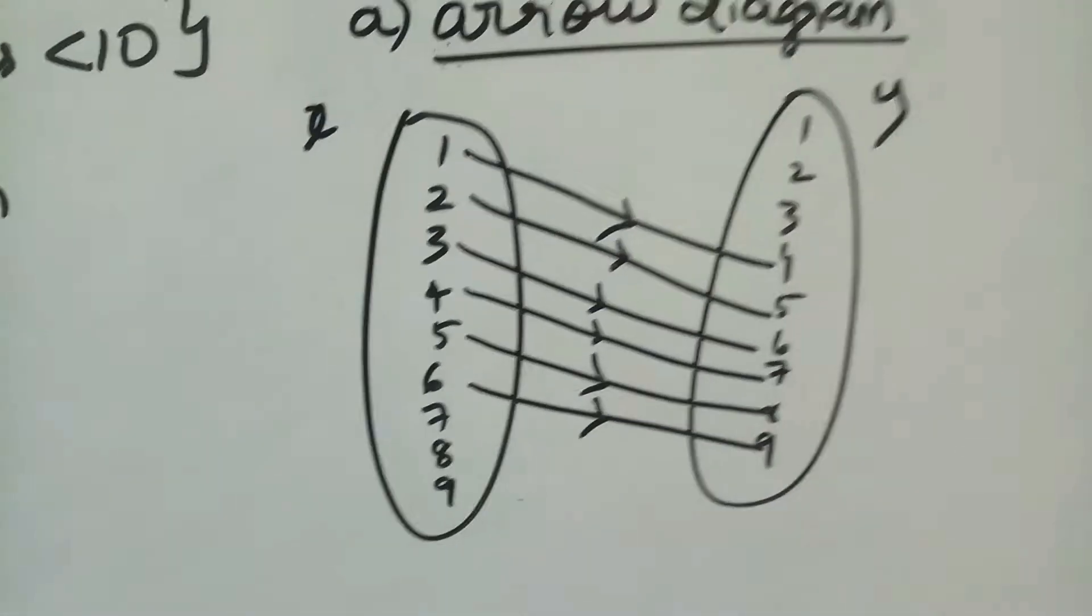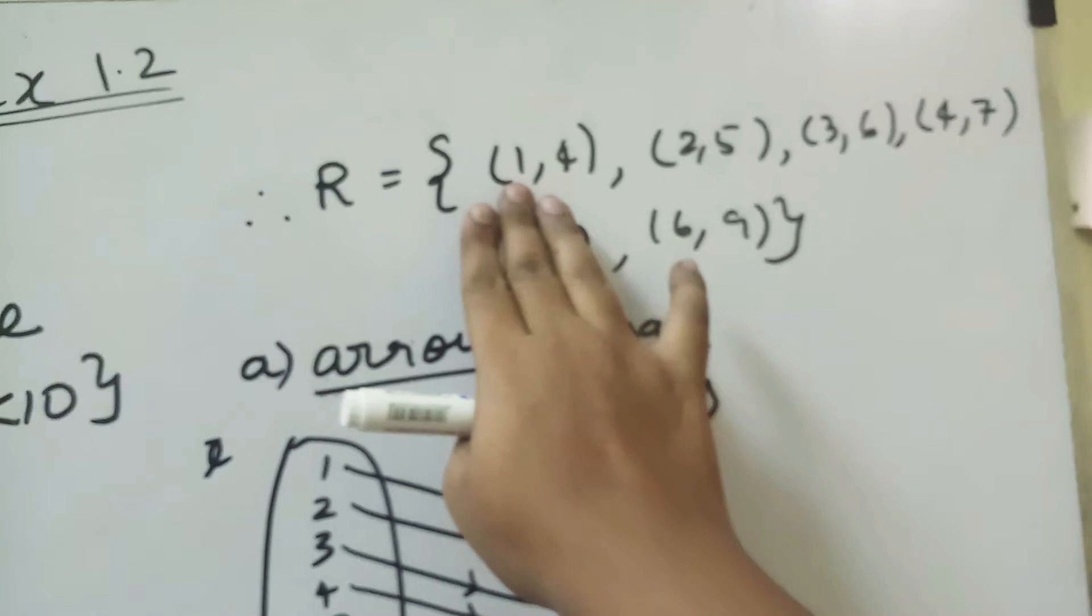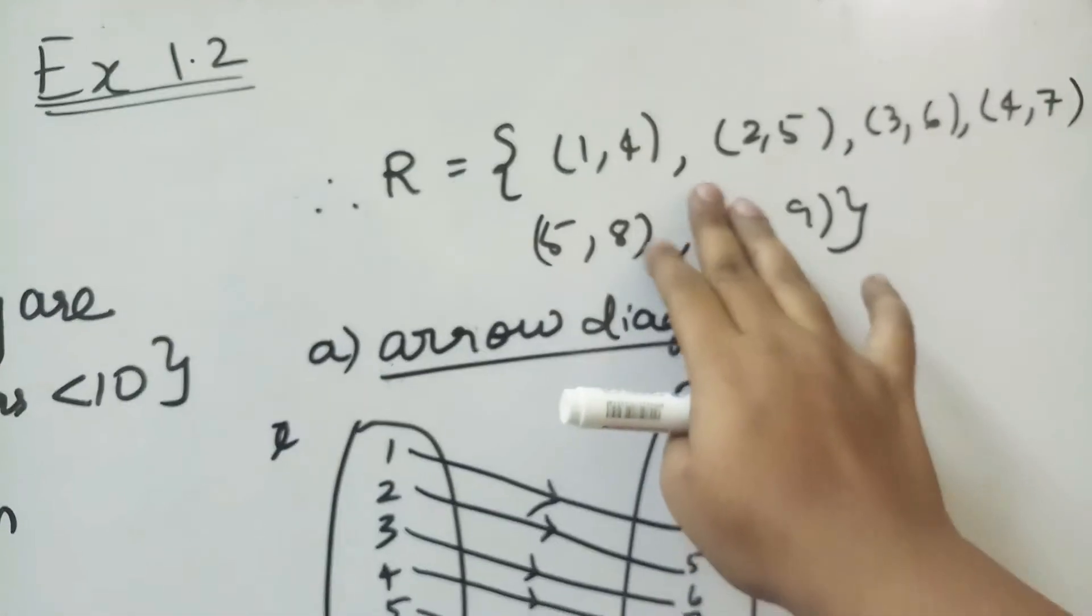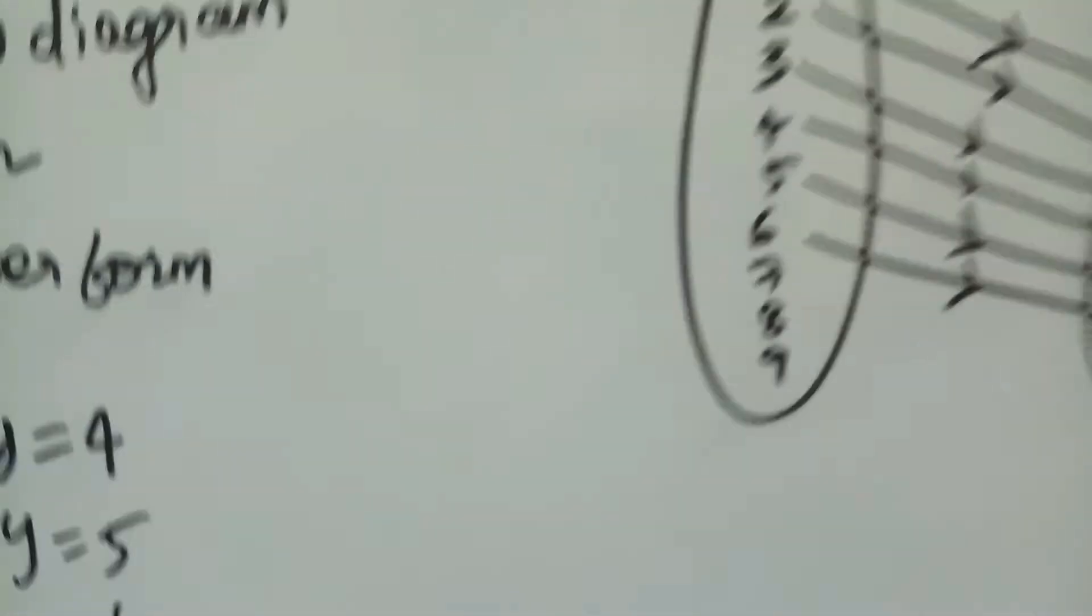This is 6, and then we have in the graph we have positive values. X values are 1 to 6, y values are 4, 5, 6, 7, 8, 9. So graph.